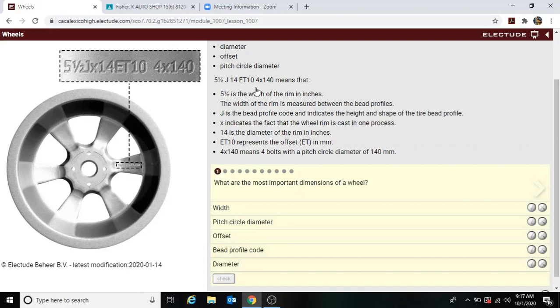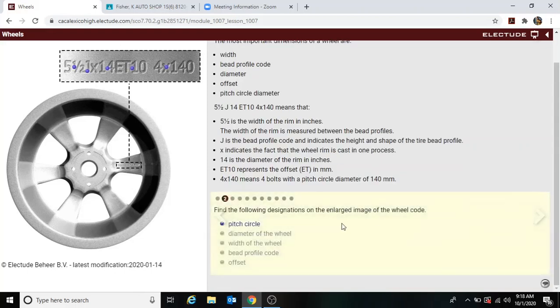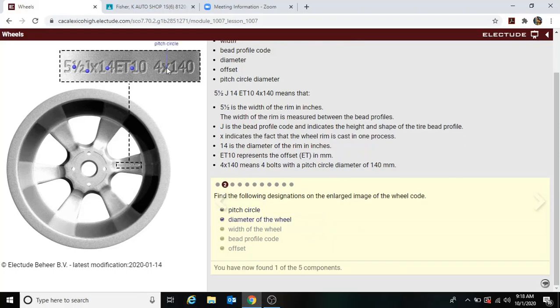This should actually be down here, so we just read all this—sorry I didn't notice on the last one—so this is our first question here, everything corresponds to this. Find the following designations: the pitch circle, 4 by. Diameter of the wheel: 14 is the diameter of the rim. Width of the wheel: up here, 5.5 is the width of the rim. Bead profile code: the bead profile code here is J. Offset: oh that would be our last one, the ET10.